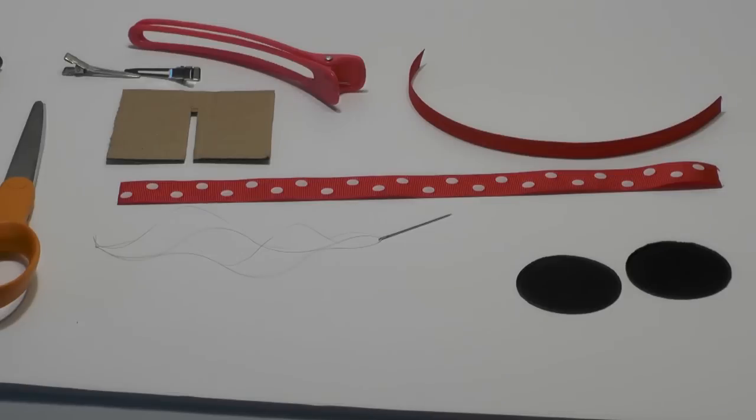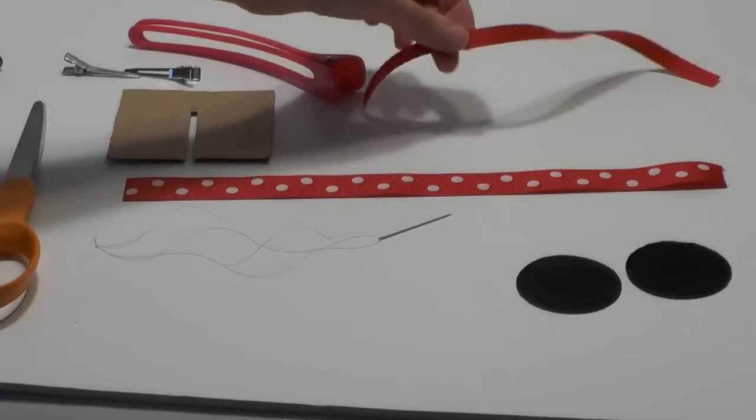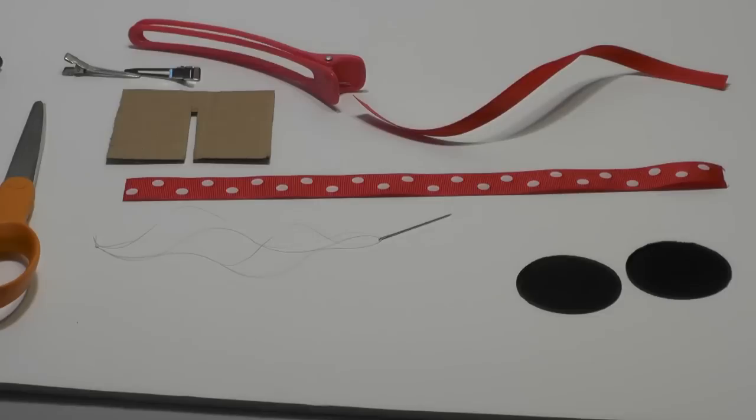Okay, we are working with a 12-inch piece of red and white polka dot ribbon that's 7/8 inch. Also got a piece of red 3/8 inch ribbon that's going to be for the middle of the bow and to cover your clip.